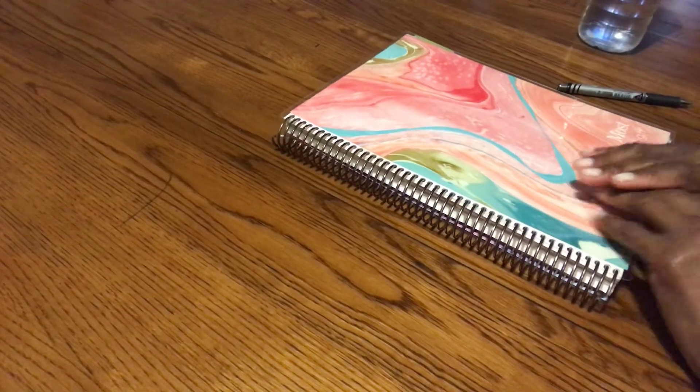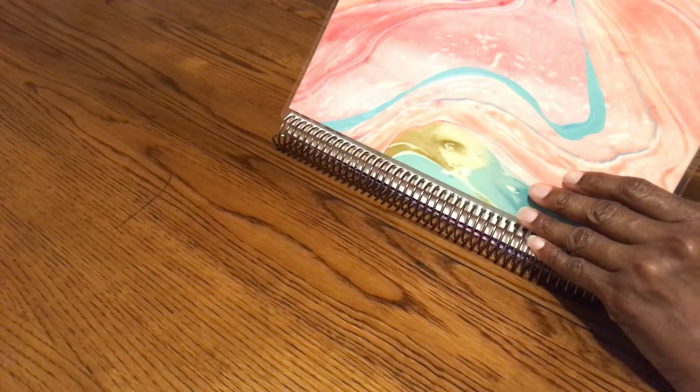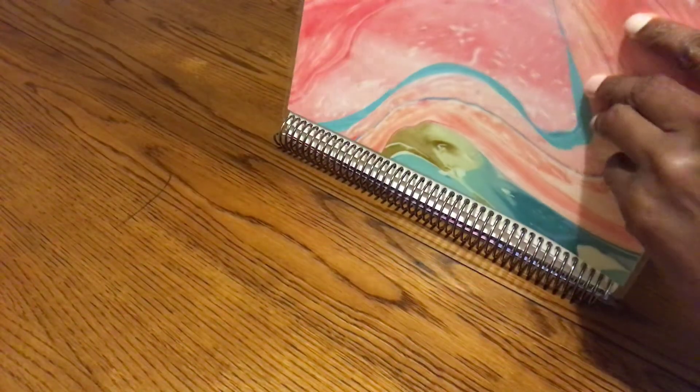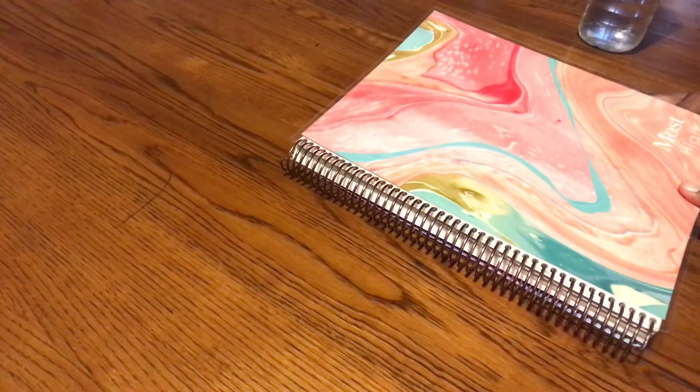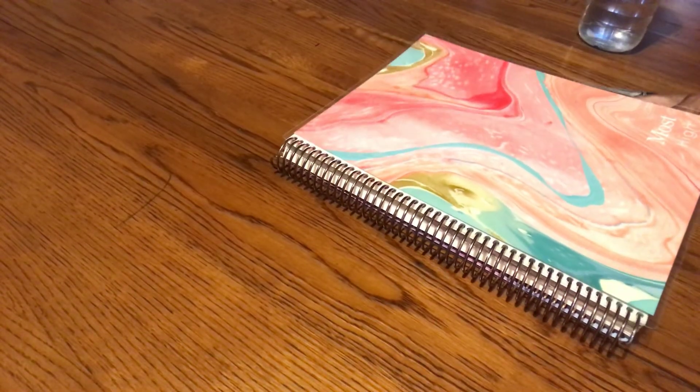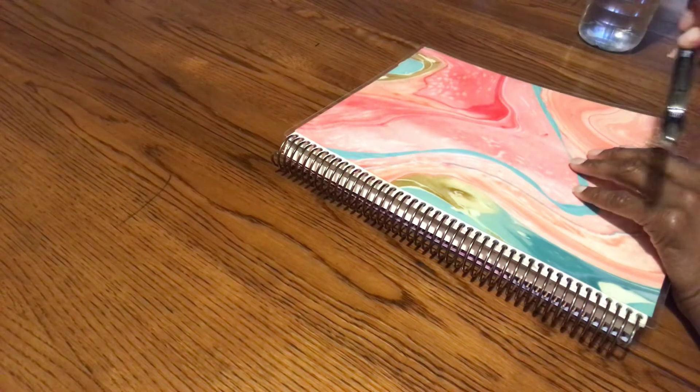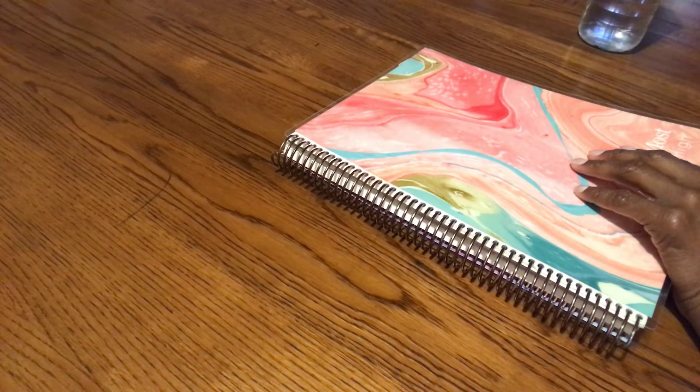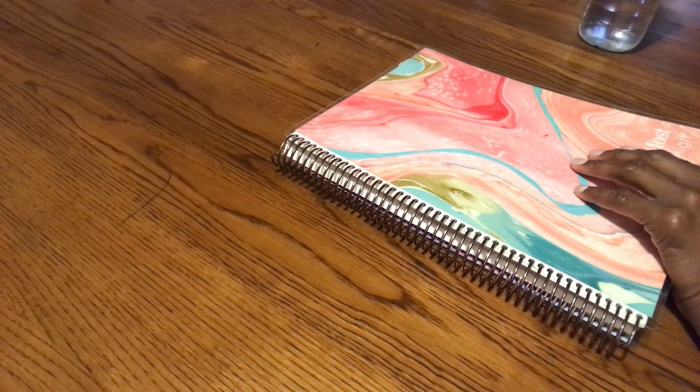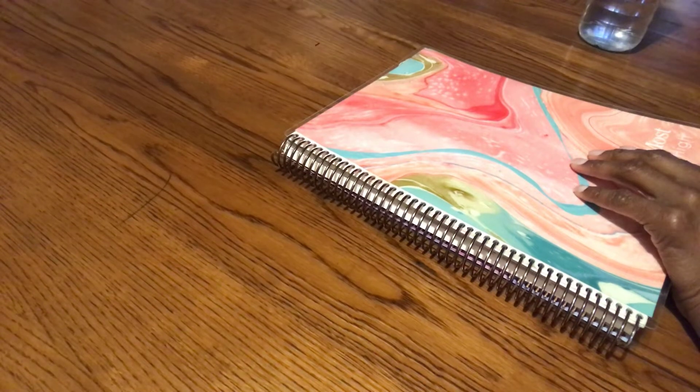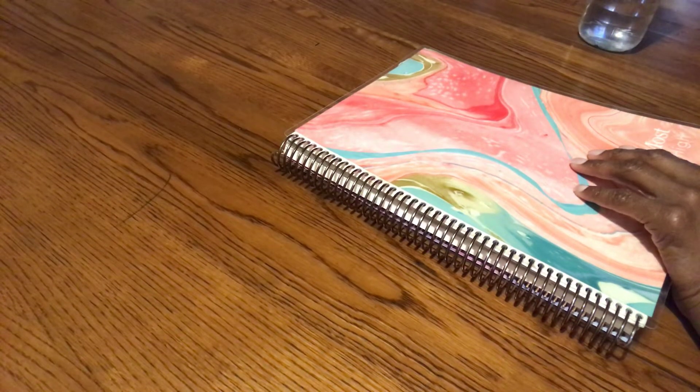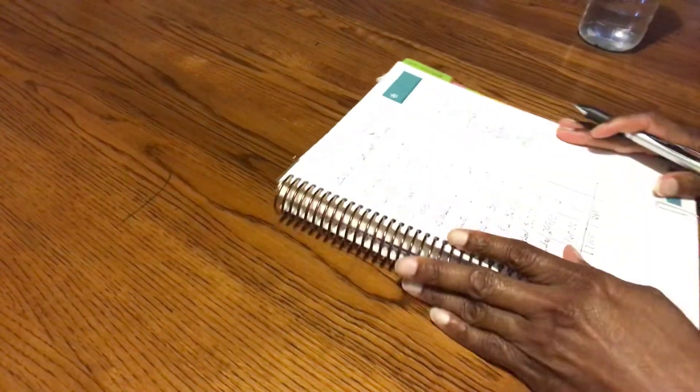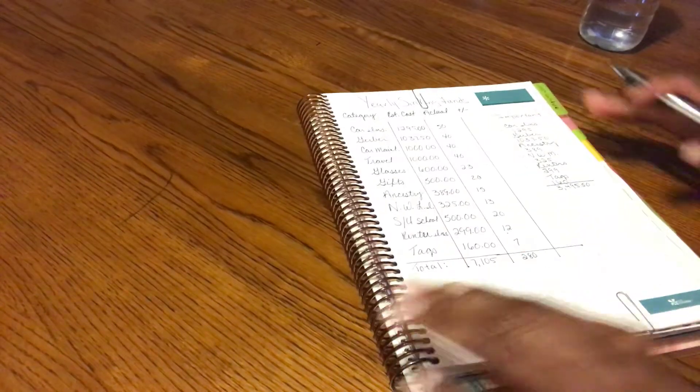Now I am going to show you what I have done so far for my sinking funds. I am using my Erin Condren deluxe planner, and the pen I'm using is an Energel liquid gel ink 0.7.